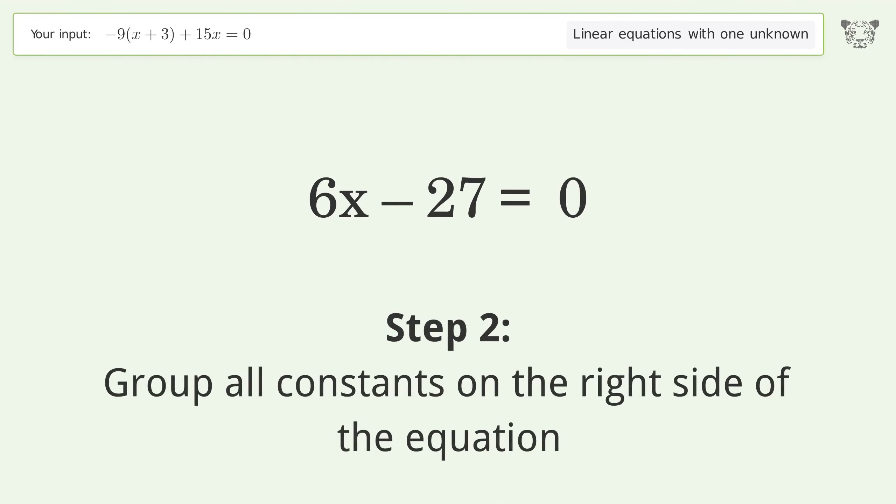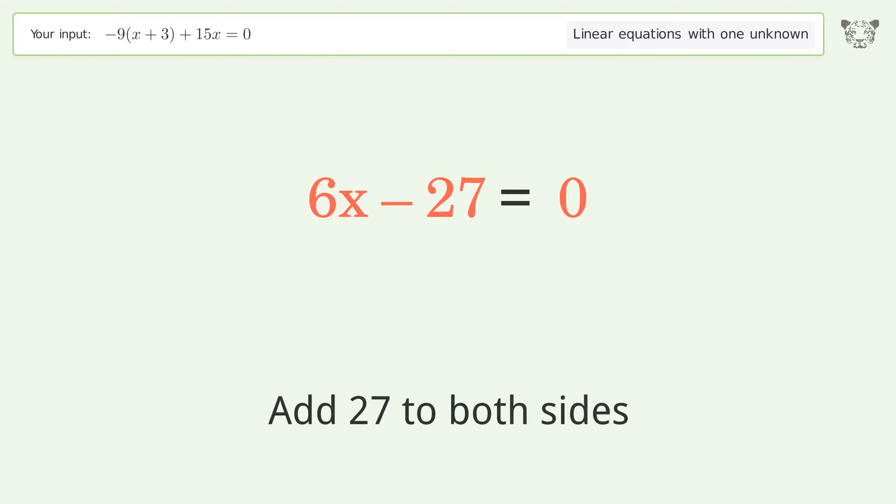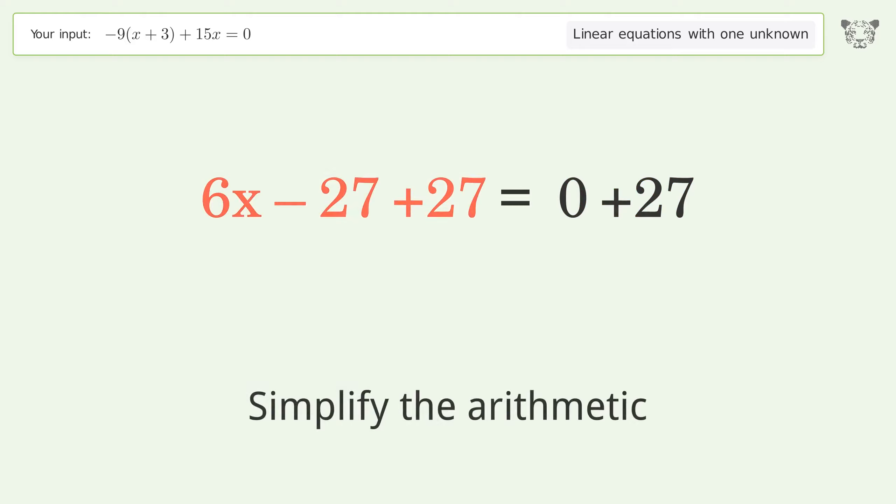Group all constants on the right side of the equation. Add 27 to both sides. Simplify the arithmetic.